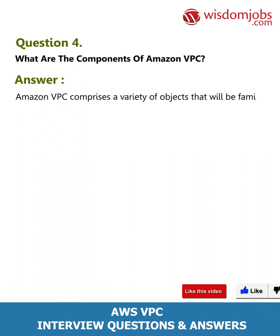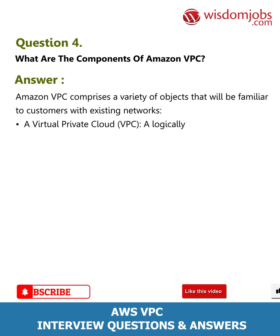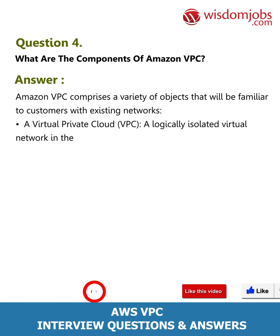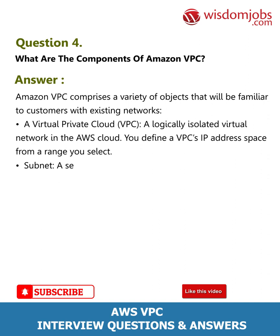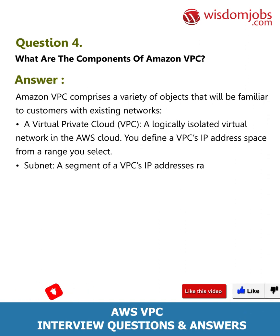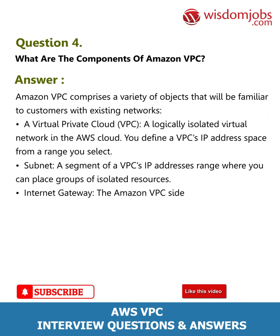Question 4: What are the components of Amazon VPC? Answer: Amazon VPC comprises a variety of objects that will be familiar to customers with existing networks. A Virtual Private Cloud (VPC) is a logically isolated virtual network in the AWS cloud — you define a VPC's IP address space from a range you select. A subnet is a segment of a VPC's IP address range where you can place groups of isolated resources.